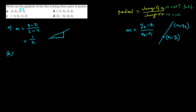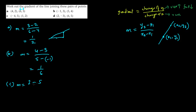Question b: the change of y is 4 minus 3, and the change of x is 5 minus (minus 1), which is 6. So the gradient is 1 divided by 6. Question c: y2 is 2 minus y1 which is 5, divided by x2 which is 1 minus (minus 4). So the gradient is 2 minus 5, which is minus 3, over 1 minus minus 4, which is 5. The gradient is minus 3 over 5.